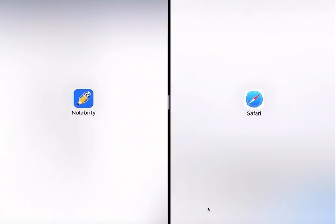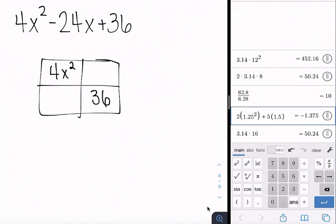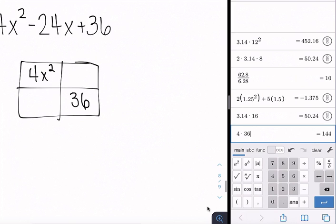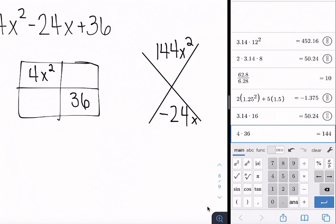I don't want to make any mathematical errors right now. So I'm just going to double check my work here. So 4 times 36. Okay. So I am going to have a product for these two of positive 144x squared. And the bottom here is going to be negative 24x. That comes in right there. Perfect.